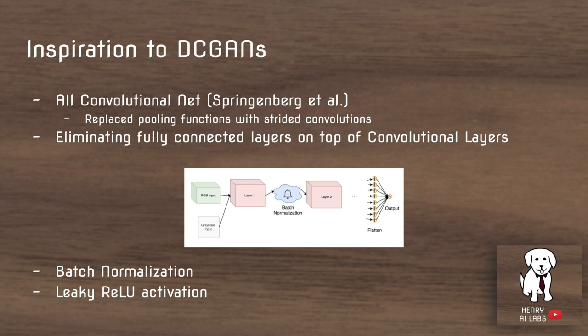Another idea is batch normalization. Batch normalization takes a vector of features, or a matrix, and normalizes them so that they have the same parameter mean and another parameter for the standard deviation — so the features in the layers of a neural network are distributed just like a standard multivariate Gaussian.